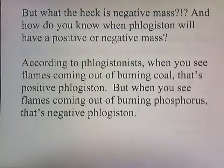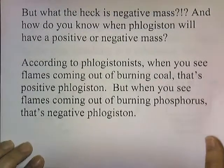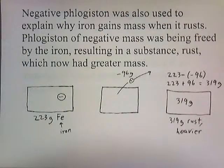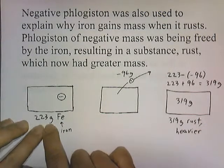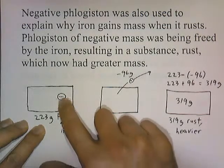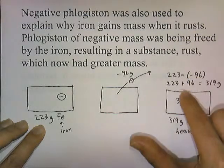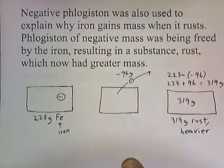But what exactly is negative mass? And how do you know when phlogiston will have a positive or a negative mass? According to the phlogistonists, when you see flames coming out of burning coal, that's positive phlogiston; but when you see flames coming out of burning phosphorus, that's negative phlogiston. Negative phlogiston was also used to explain why iron gains mass when it rusts. You put an iron nail outside for a few days, and it's covered with this red powder and it weighs more. Phlogiston of negative mass inside the iron was being freed by the iron, resulting in rust, which now had greater mass.